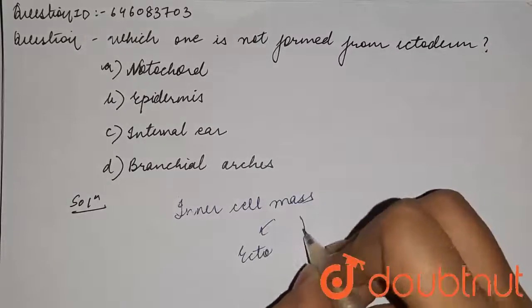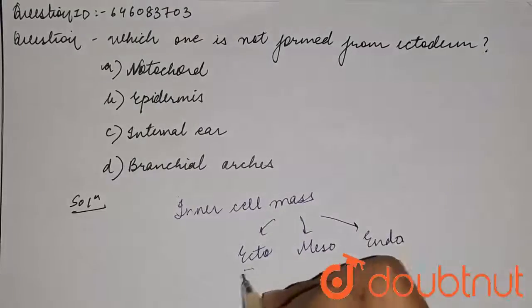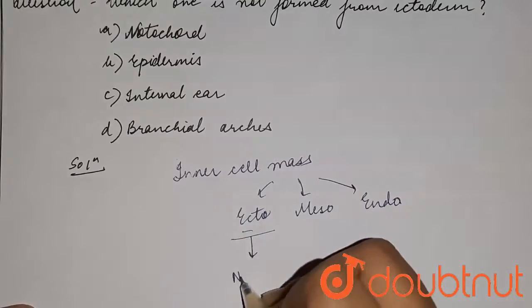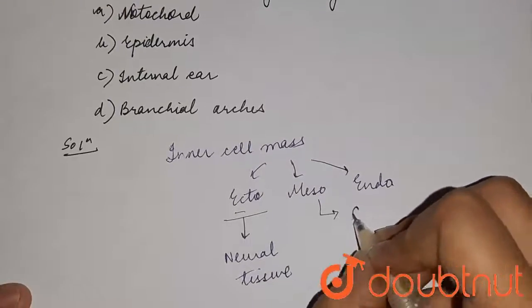mesoderm, and endoderm. Ectoderm is mostly responsible for neural tissue formation. Mesoderm is generally responsible for